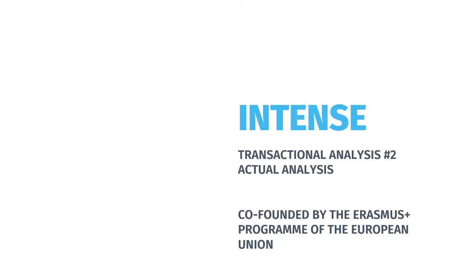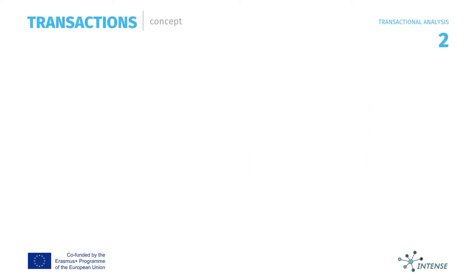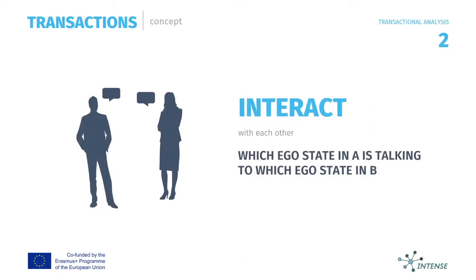Transactional analysis part 2: how to apply your knowledge about ego states and transactions. Another important concept is the actual concept of transactions. Transactions are about how people interact with each other — specifically which ego state in person A talks to which ego state in person B. Sometimes communication continues in a straightforward, easy way, while at other times things get jumbled up, confusing, unclear, and unsatisfying.